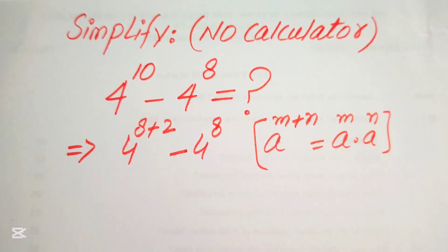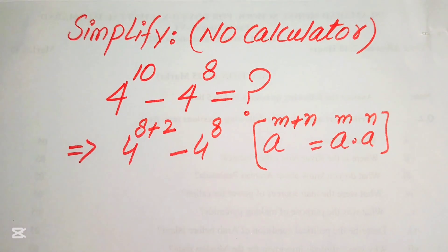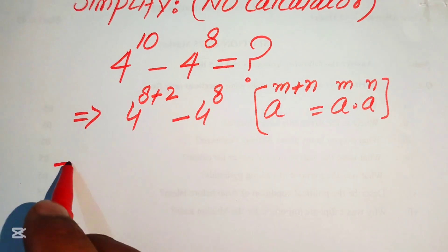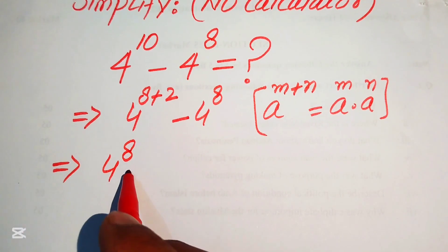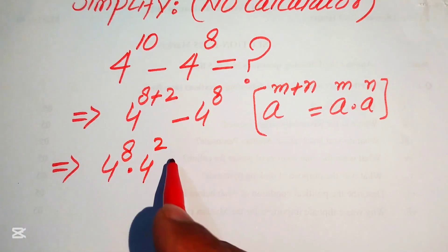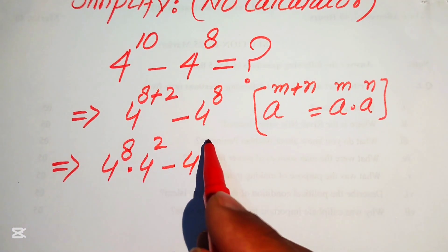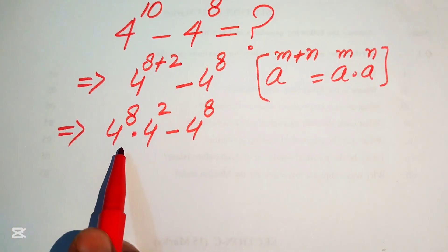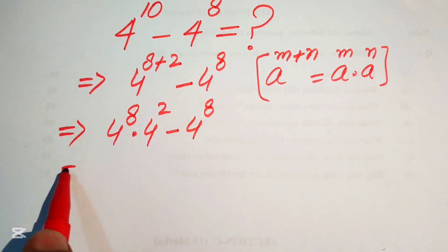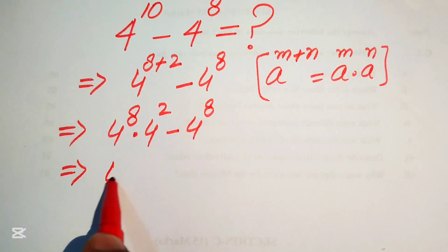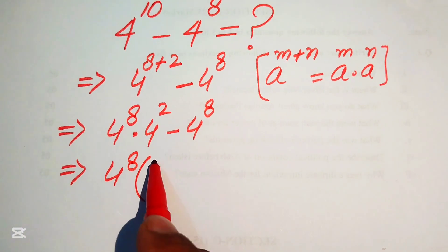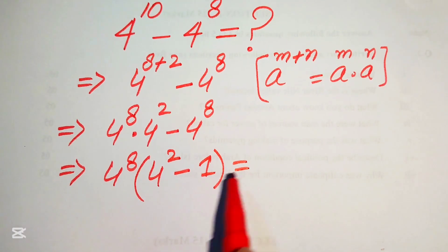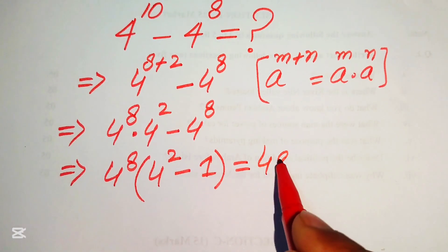We apply this exponent law to the first term, rewriting it as 4 to the power of 8 multiplied by 4 squared, minus 4 to the power of 8. Now we see that 4 to the power of 8 is the common term, so we factor it out, leaving the remaining terms as 4 squared minus 1.